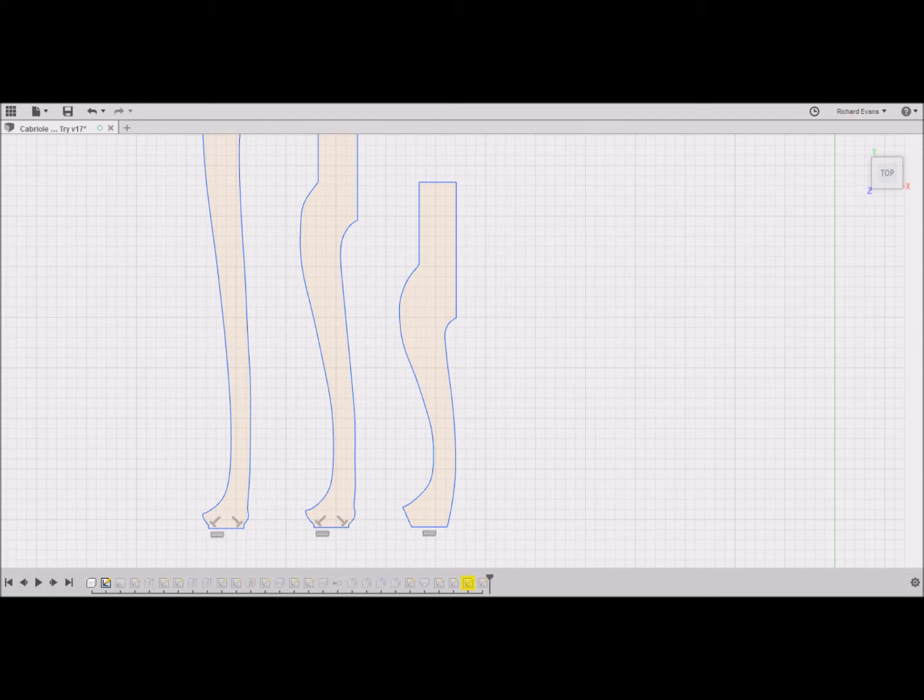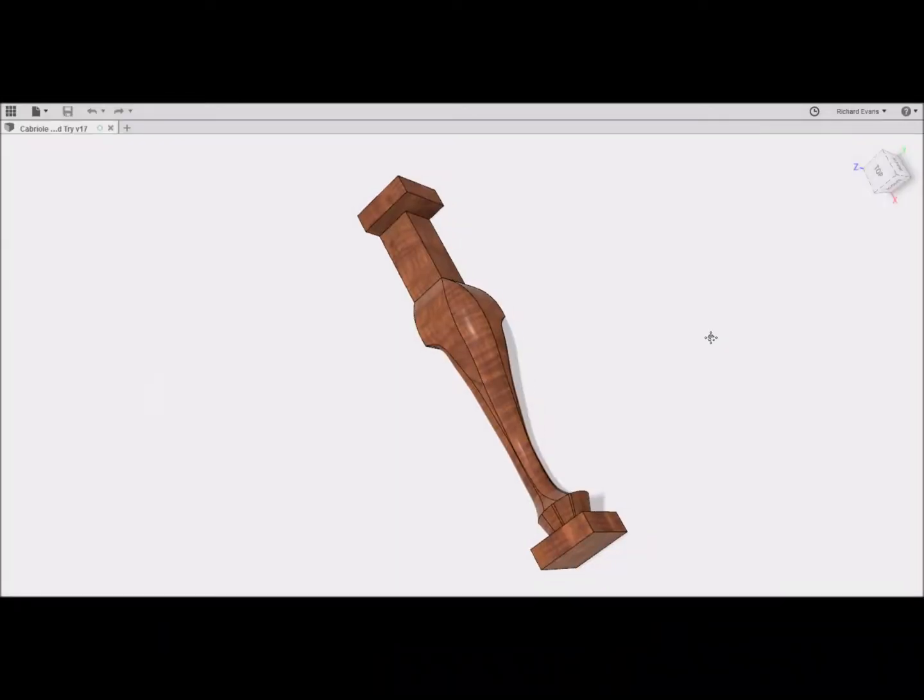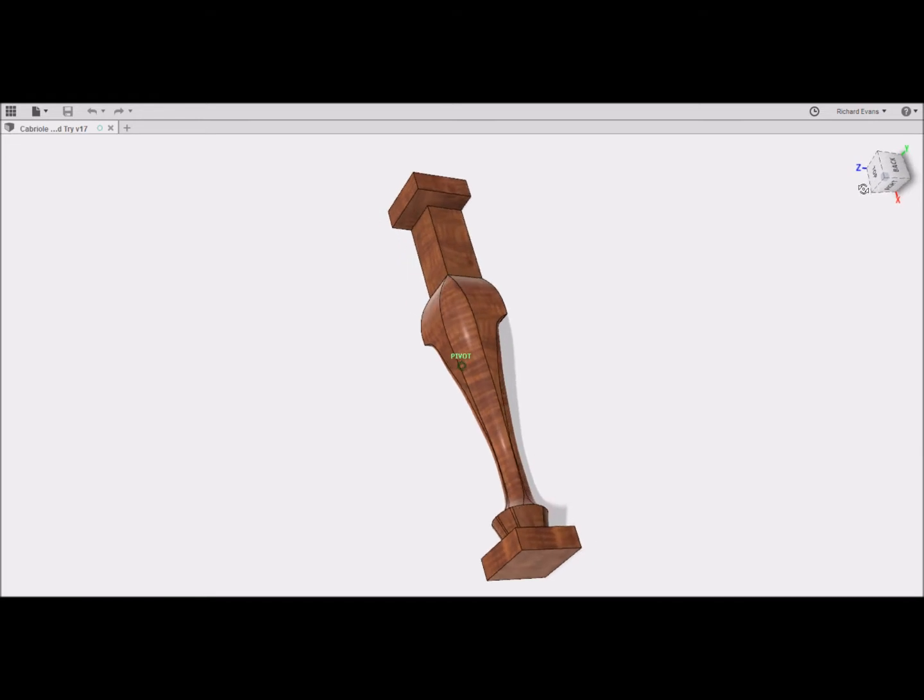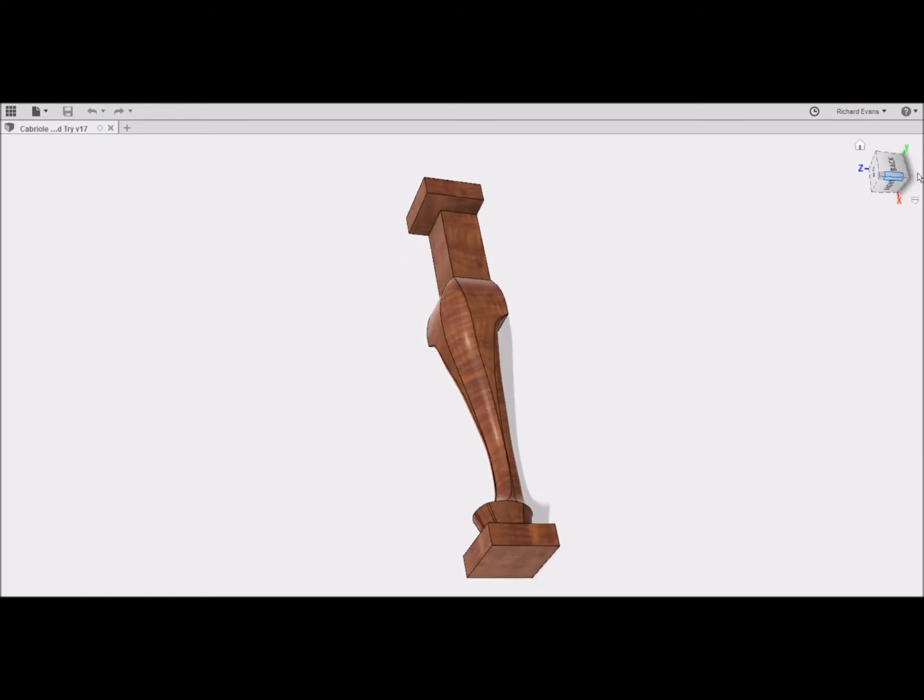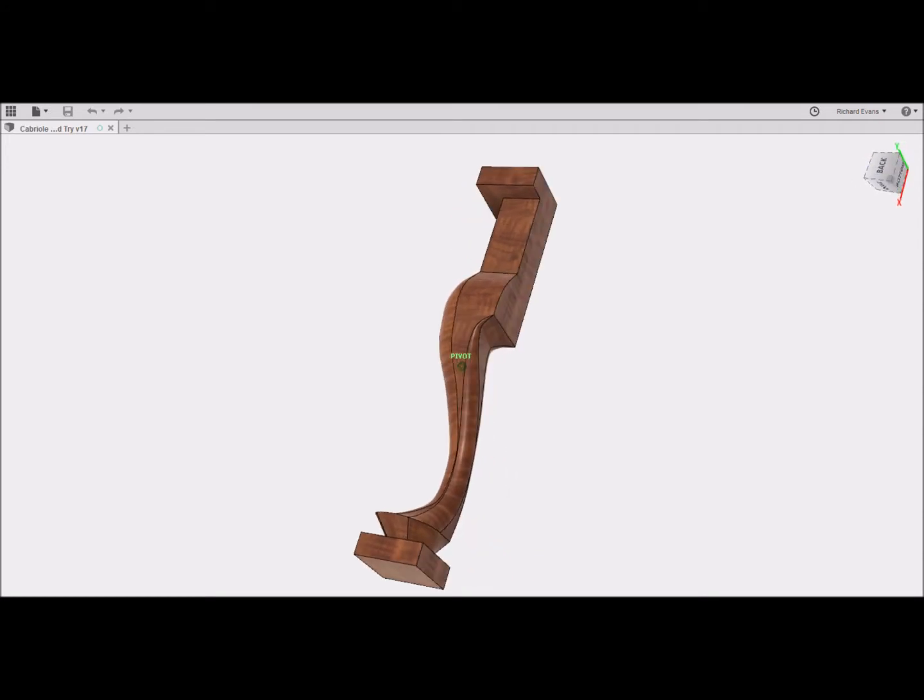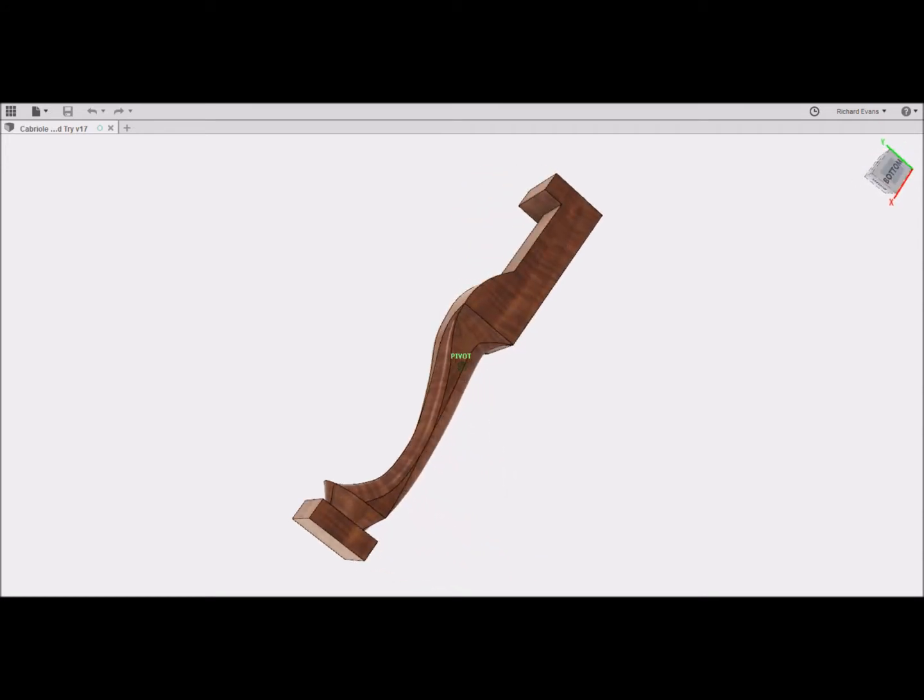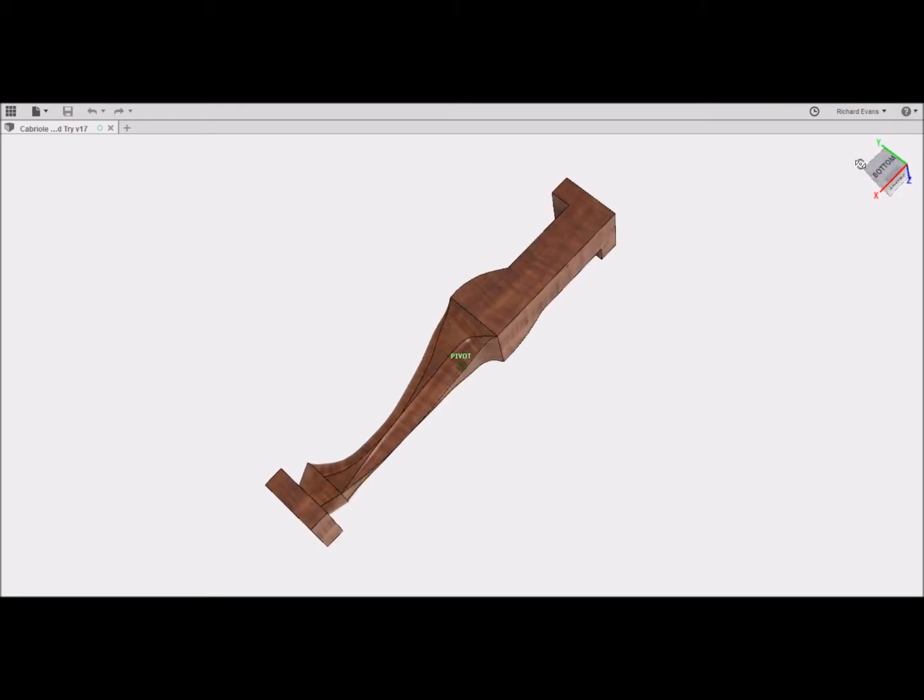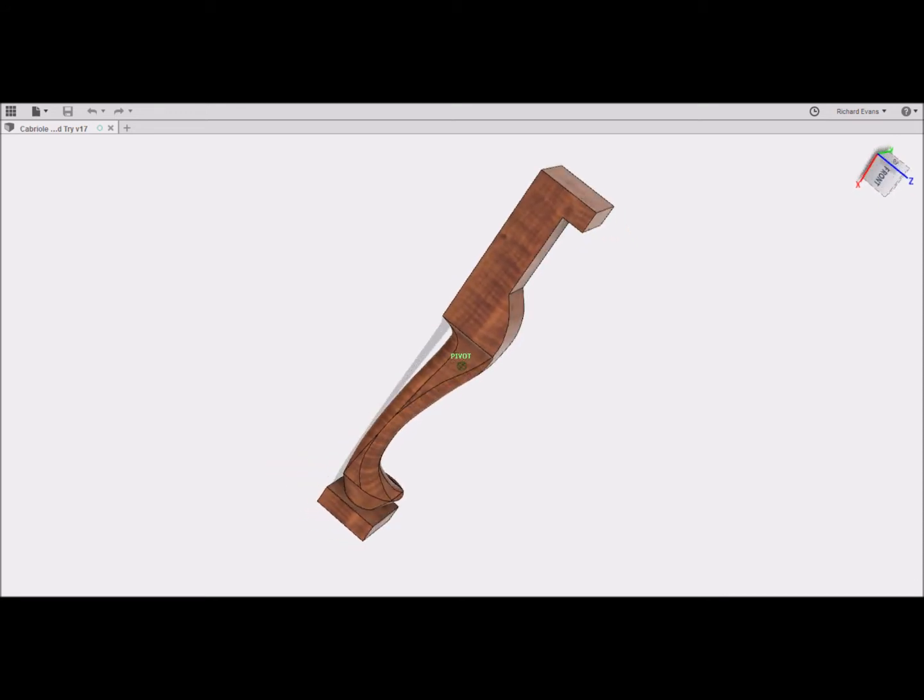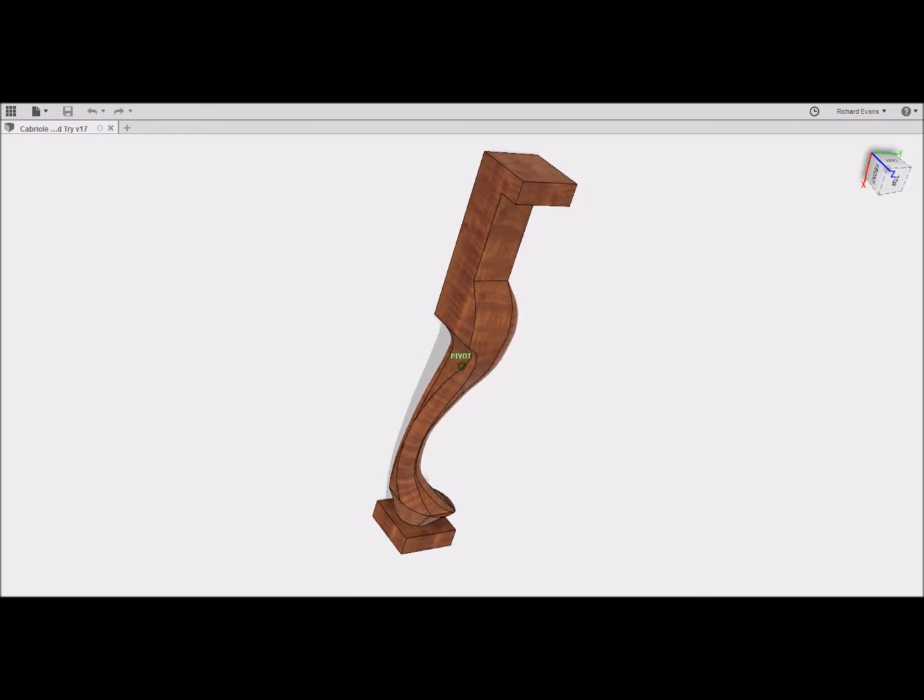Computer-aided design or CAD software used for this proof-of-concept project was Fusion. Here is the final computer model of the leg. It was surprisingly easy using the CAD software to create this model from the template sketch. The blocks at the top and bottom of the leg will be used to register the stock in a holding jig for the CNC machining. These blocks will be cut off after project completion.